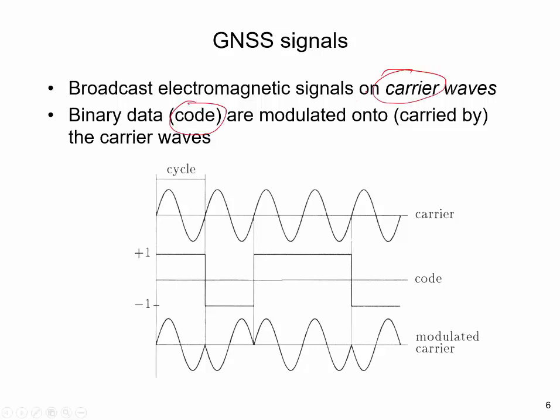The carrier wave transmitted by a satellite has several characteristics, such as phase, amplitude, or frequency. Any of these can be changed to carry code information. Therefore, GNSS signal codes are modulated onto electromagnetic carrier waves. The figure illustrates this principle. The top curve shows the high frequency carrier wave. The middle one shows the signal, expressed as a binary plus one minus one code. And the bottom one shows the modulated carrier, which contains the code information.